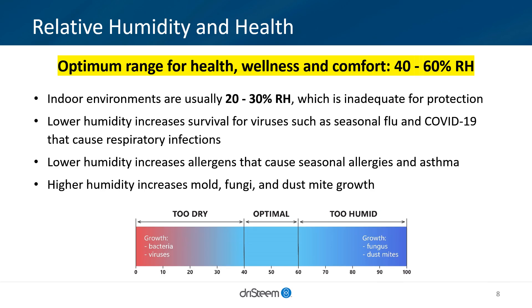The optimal range for human health, wellness, and comfort is 40-60% RH. To many people's surprise, indoor environments are usually 20-30% RH, which is inadequate for protection against common illnesses.